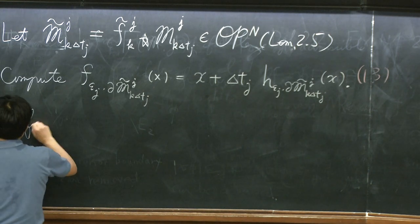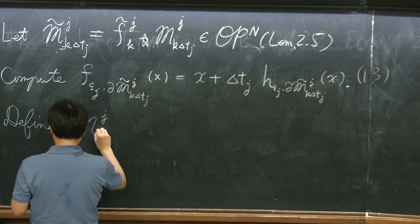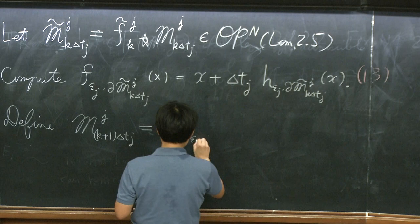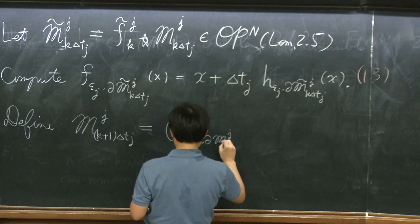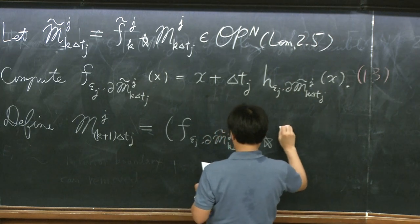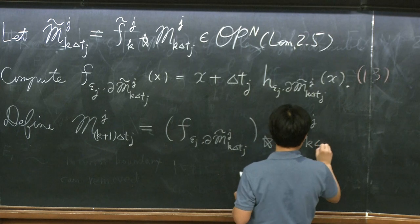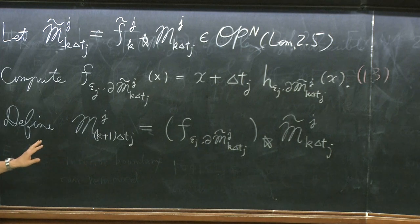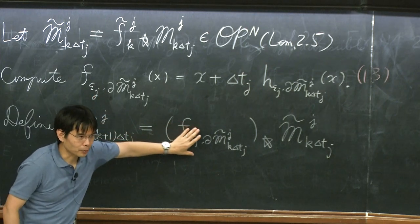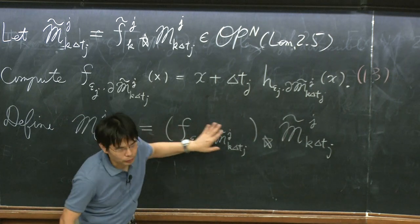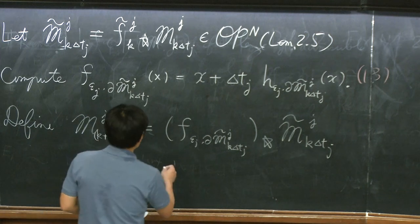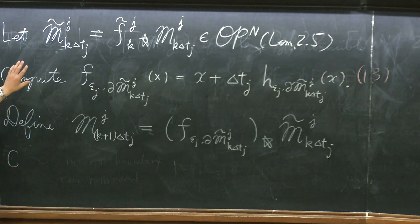Finally, define the next step: M_j((k+1)δt_j) as the image of M̃_j(k, δt_j) under this motion by approximate mean curvature. This Lipschitz map is actually a diffeomorphism — no topologically difficult things happen here; it just moves the open partition by a smooth vector field a little bit. You have these two-step things for each time step, and then repeat as many times as you want.